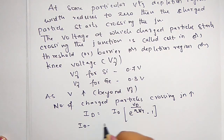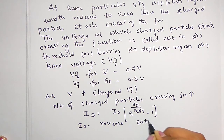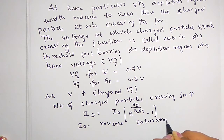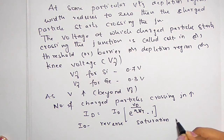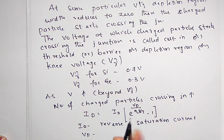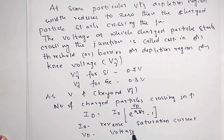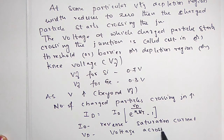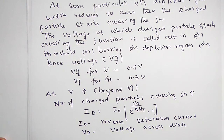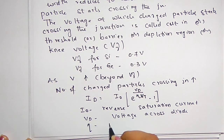In this equation, I0 is nothing but the reverse saturation current. Vd is nothing but the voltage across the diode. Eta is nothing but the ideality factor, also called the intrinsic factor.